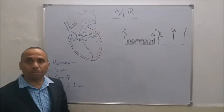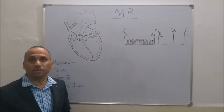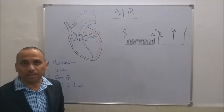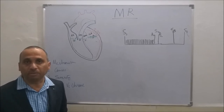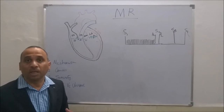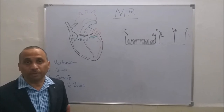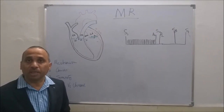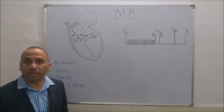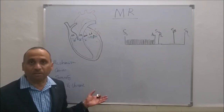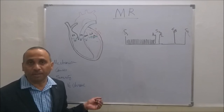Now what are the causes? The common cause in our setting is rheumatic heart disease. Or it can be due to infective endocarditis, or connective tissue disorders where the valve may be involved. A normal valve causing MR typically occurs in the case of dilated cardiomyopathy, where there is annular dilatation leading to mitral regurgitation.